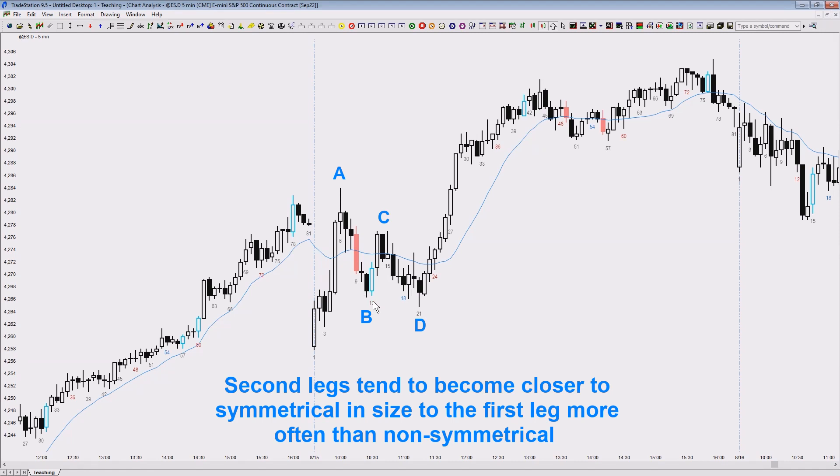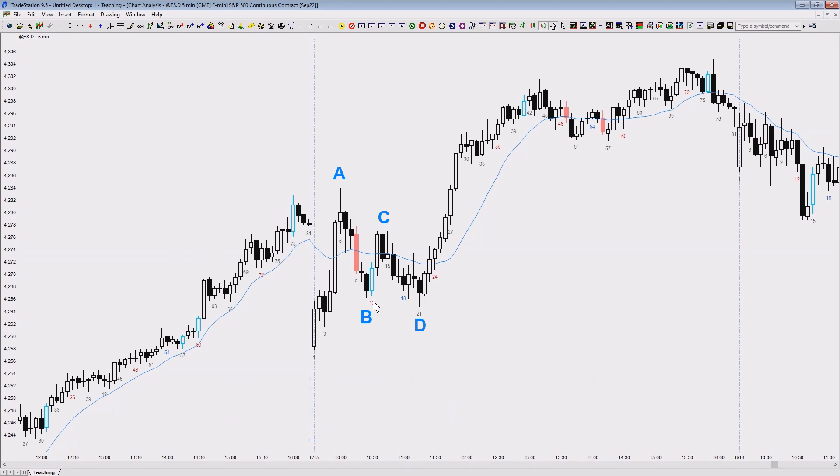Like you never exactly know which one belongs to which leg, but price action structure is such that it usually tries to achieve symmetry.